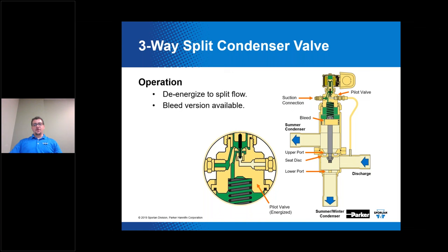Typically your split condenser valve is controlled by an ambient temperature control set for a specific outdoor temperature, and it can also be controlled by a high side pressure control device. The valve depicted here is our version containing the bleed port. Some variations do not have the bleed port — the bleed port allows refrigerant to transfer back from the idle condenser through the piston and pilot assembly back to the suction header.